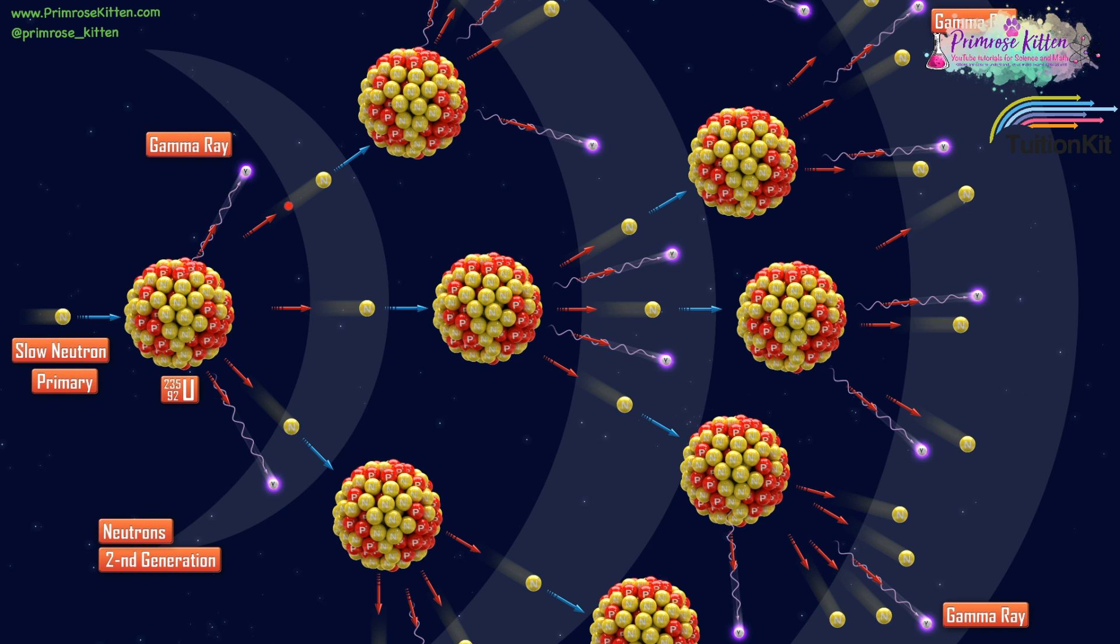These second-generation neutrons can then go and smash into further uranium nuclei, creating more neutrons that can smash into more uranium nuclei. This is why it's called a chain reaction, because this one nucleus that started it has gone on to make many more nuclei which can continue the reaction on and on.